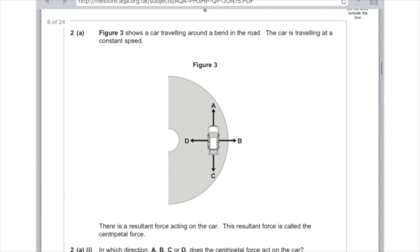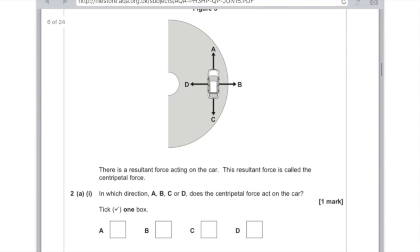Right, moving on. 2a. Sorry, that's traffic noise. Figure 3 shows the car travelling around a bend in the road. The car is travelling at a constant speed. There is a resultant force acting on the car. This resultant force is called the centripetal force. In which direction, A, B, C or D, does the centripetal force act on the car? Remember that it always acts towards the centre of the circle that it's rotating around, so therefore it needs to be a tick in D.